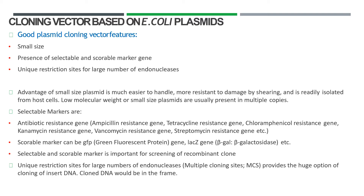The scoreable marker can be GFP — the green fluorescent protein gene — or lacZ, which causes beta-galactosidase or alpha complementation, which I've already mentioned in a previous video. Selectable and scoreable markers are important for screening and selection of recombinant or transformed cells.